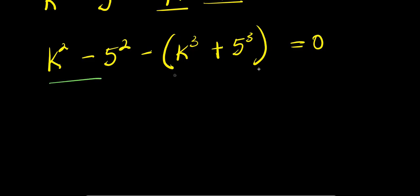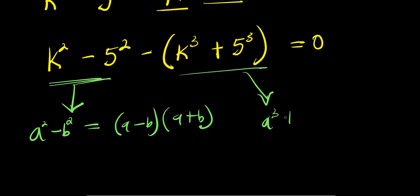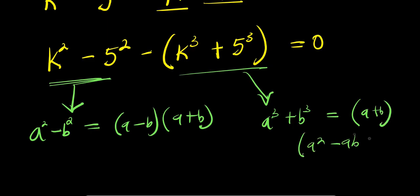Now we need to expand these expressions. For k squared minus 5 squared we use the identity: a squared minus b squared equals (a minus b)(a plus b). For k cubed minus 5 cubed we use: a cubed minus b cubed equals (a minus b)(a squared plus ab plus b squared). In each case, a equals k and b equals 5.